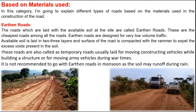Number one is earthen roads. The roads which are laid with the available soil at the site are called earthen roads. These are the cheapest roads among all types. Earthen roads are designed for very low volume traffic. The available soil is laid in two or three layers and the surface is compacted with a rammer to expel the excess voids present in the soil.